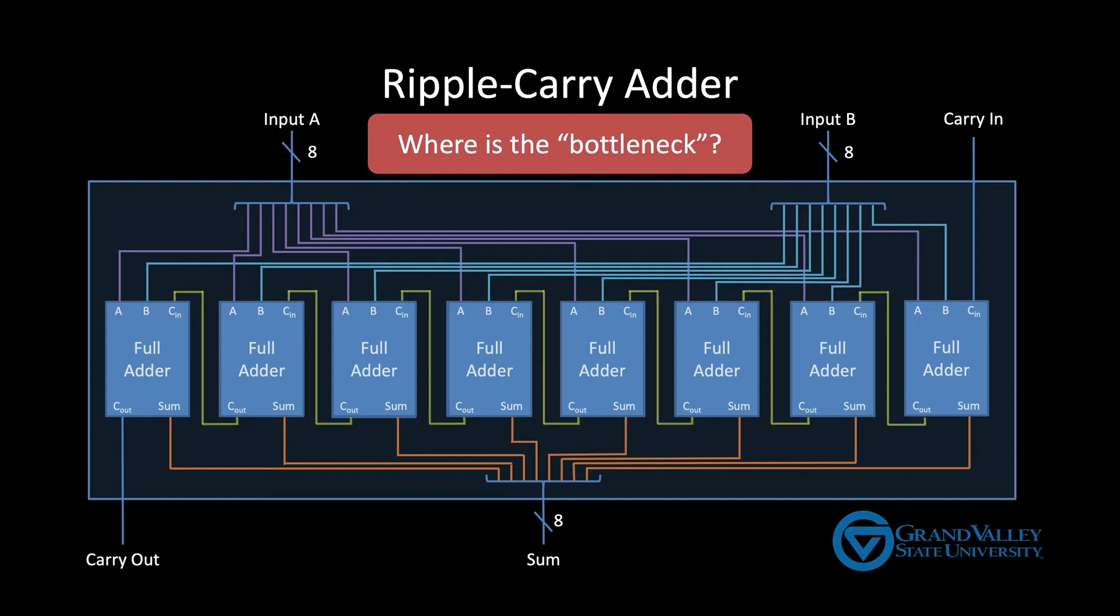It's the chain of carries. Each full adder has to wait for all the full adders before it to complete before it can begin working. Ideally, though, we'd like all the full adders to work completely in parallel. To do that, we'd also need to be able to generate the carry-ins in parallel as well.